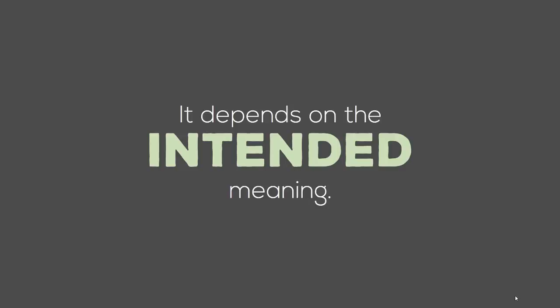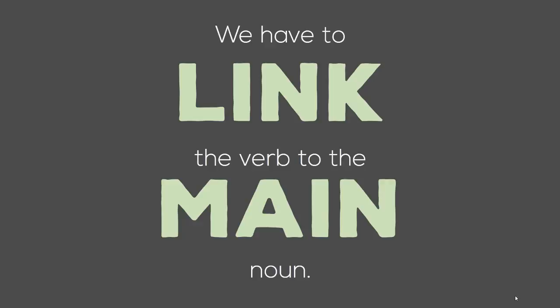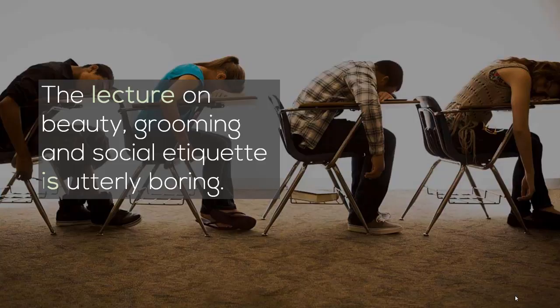What happens if there are more than one noun? We have to link the verb to the main noun, which can be tricky. For example: the lecture on beauty, grooming, and social etiquette is utterly boring. Even though we have three items — beauty, grooming, social etiquette — we're actually focusing on lecture itself. So it's singular.